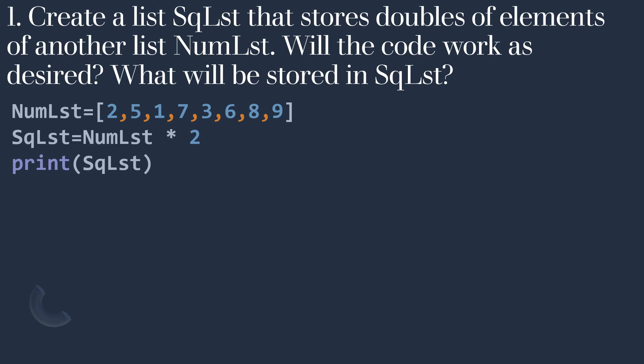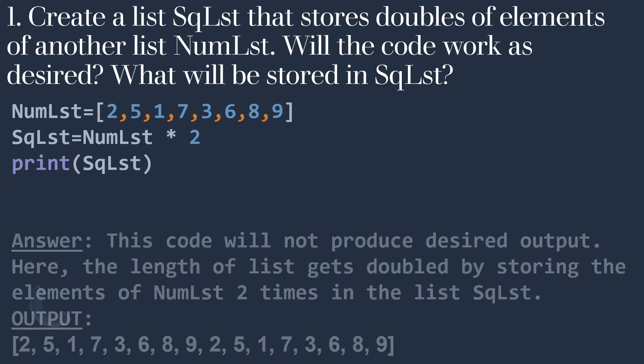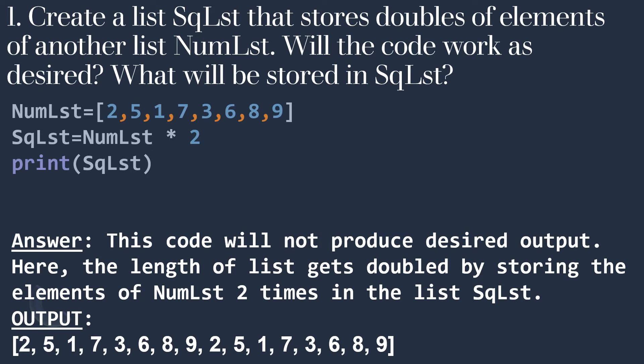The first question is: create a list sqlst that stores doubles of elements of another list numlst. Will the code work as desired? What will be stored in sqlst? Here you can see there is a list numlst having values 2, 5, 1, 7, 3, 6, 8, 9, and sqlst is assigned with the value numlst * 2. The output shows the data in numlst printed twice, so this code will not produce the desired output.